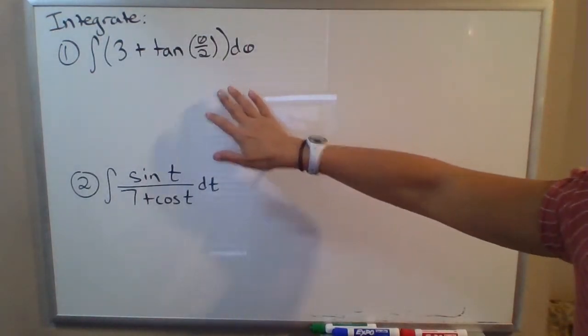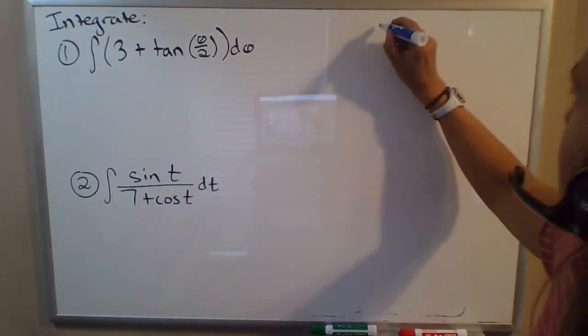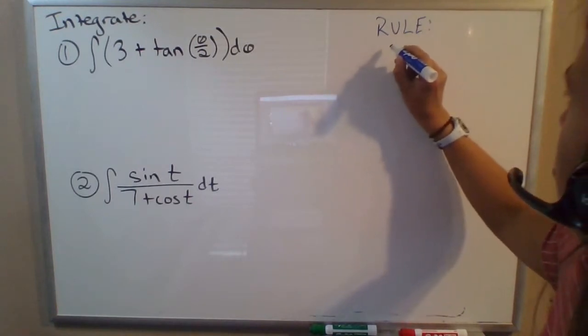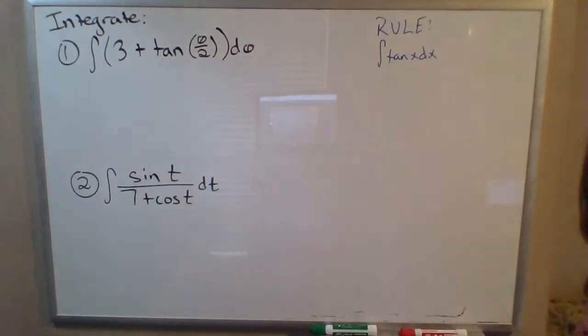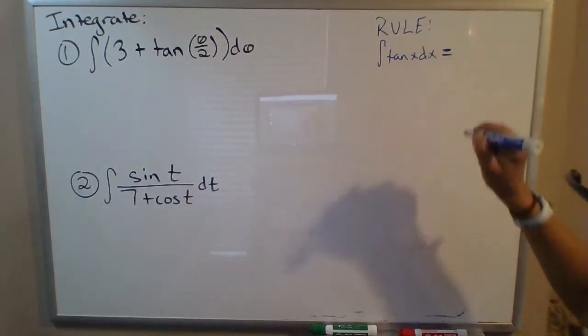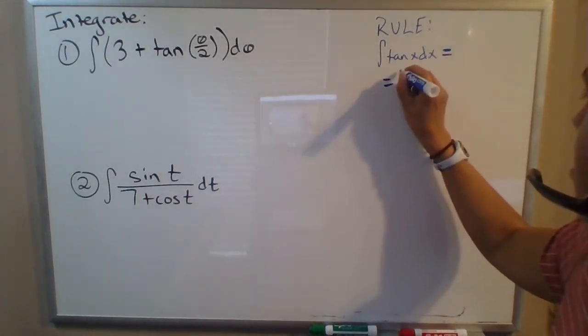So the relevant rule for example one that I've written here is that the integral of tangent of x, so we figured this out using substitution. But the antiderivative is, I'm gonna actually write this down.